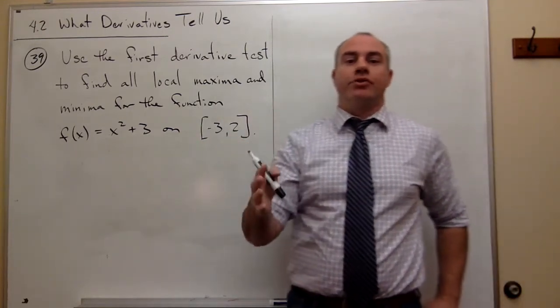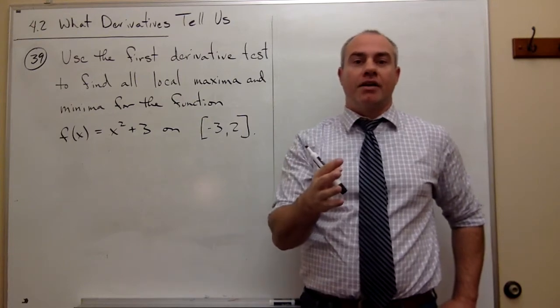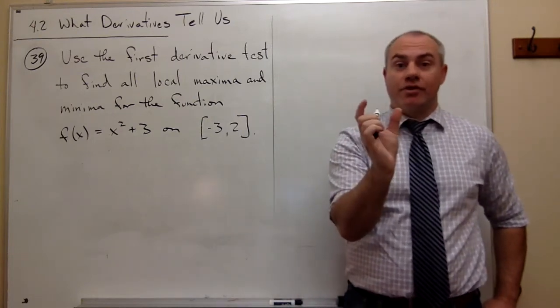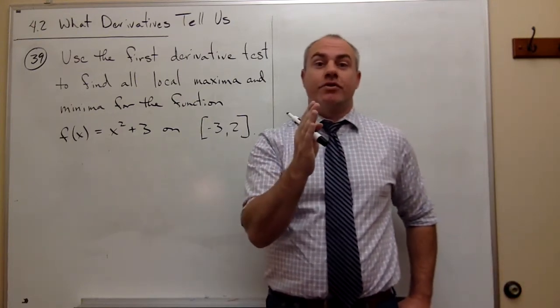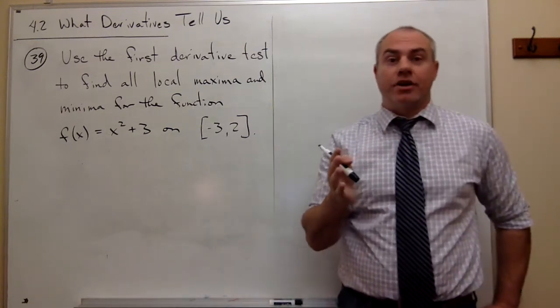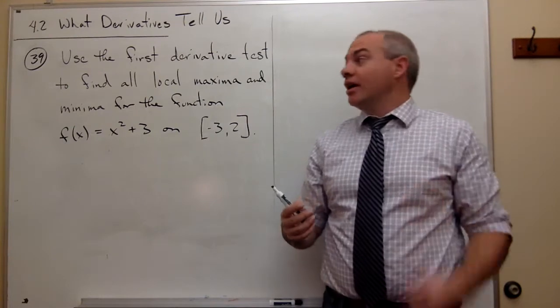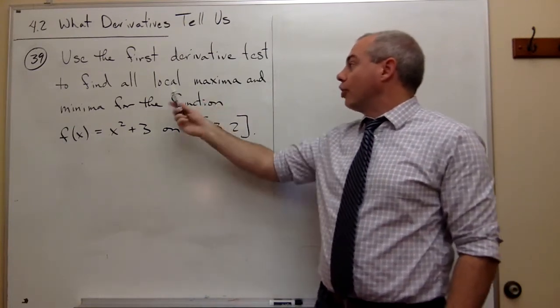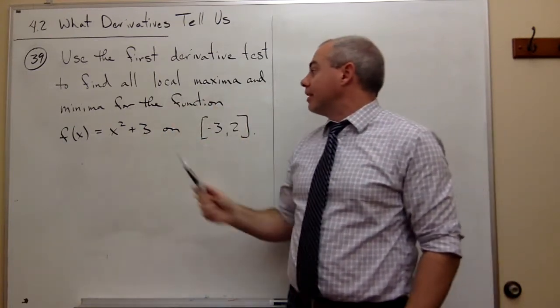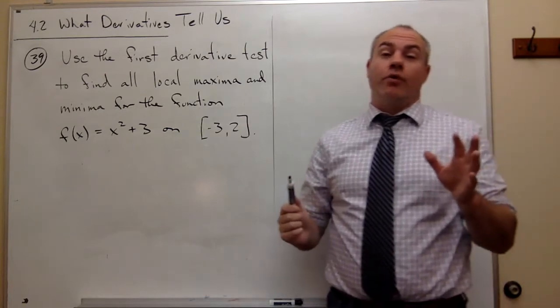I want to put those critical points on a number line, then test the intervals to see where the first derivative is positive and where it's negative. Once I've found that, I can use that information to figure out where I have local maxima and minima. Let's go through it one step at a time.